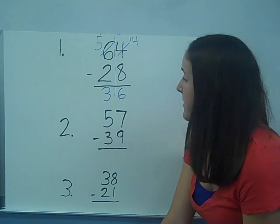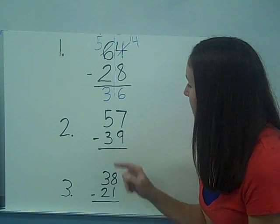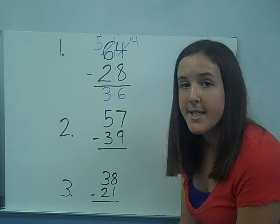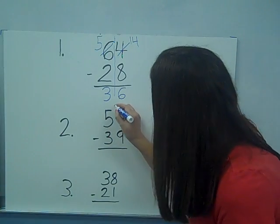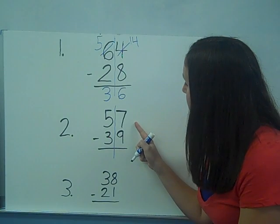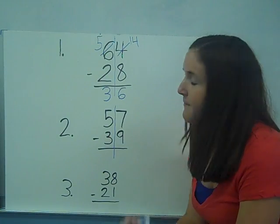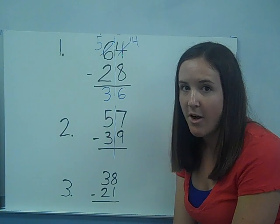Let's go ahead and do the second problem. Fifty-seven minus thirty-nine. I'm going to go ahead and separate my ones from the tens. You can, you do not have to. Always a good visual. Alright, seven minus nine. Do I have to ungroup or can I go ahead and solve? What do you think?